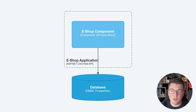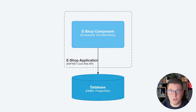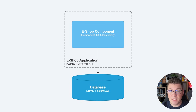Here's an oversimplified component diagram of an eshop application that contains one Web API component and a PostgreSQL relational database. This represents a typical monolith system because it has one executable application which is deployed as a single whole, and a database that is running separately.